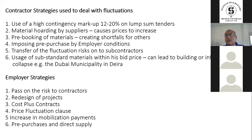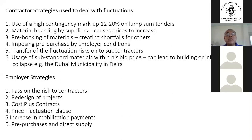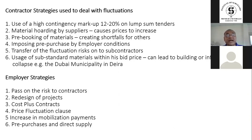The contractor strategies used to deal with fluctuations include the use of a high-contingency markup — 12% to 20% on lump-sum tenders. Materials hoarding by suppliers causes prices to increase. Pre-booking of material creates shortfall for others. Imposing pre-purchase by employer conditions. Transfer of the fluctuation risk onto subcontractors. And the usage of substandard materials within the contractor's bid price can lead to building or infrastructure collapse — as happened at the Dubai municipality in Deira, a massive catastrophic collapse of a building.